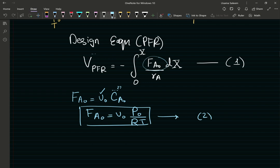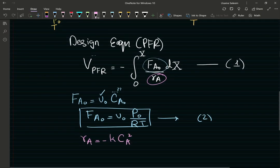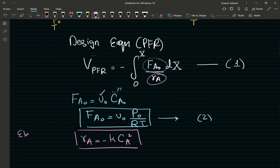FA0 is going to become V0 times P inlet pressure divided by the ideal gas constant times the temperature. So this right here is my second equation. And also my rate expression. My rate expression is going to be negative K CA squared. Keep in mind, it's an elementary rate law. Elementary rate law for elementary reactions.